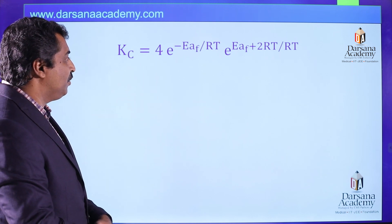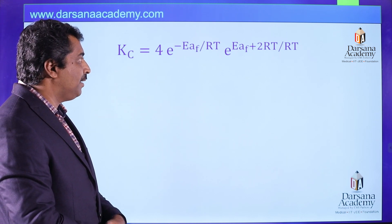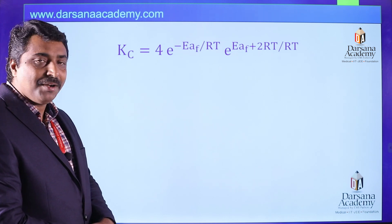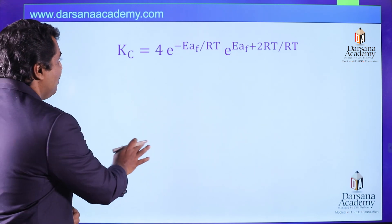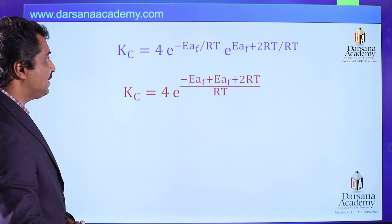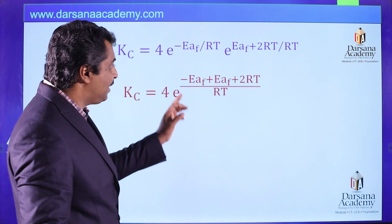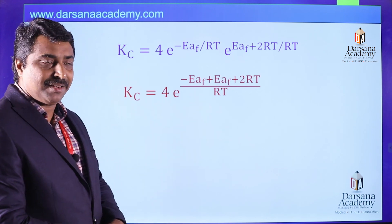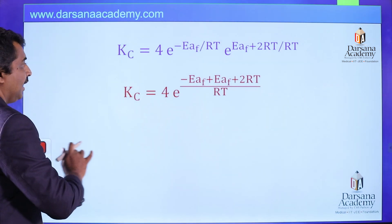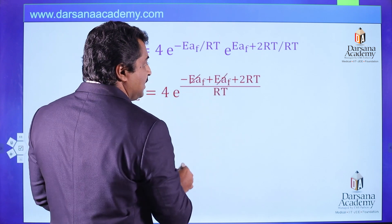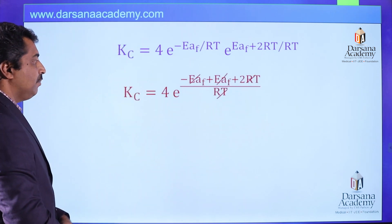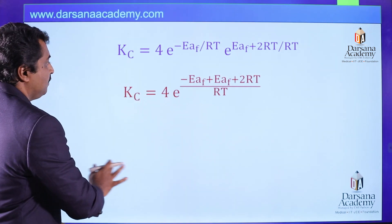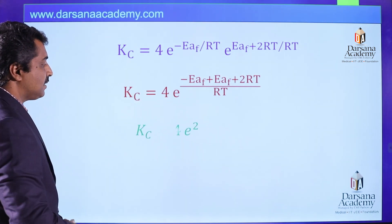On simplification, KC equals 4 times e raised to minus EAF divided by RT times e raised to (EAF plus 2RT) divided by RT. The minus EAF and plus EAF terms cancel each other, and RT divided by RT also cancels, leaving KC equals 4 times e raised to 2.